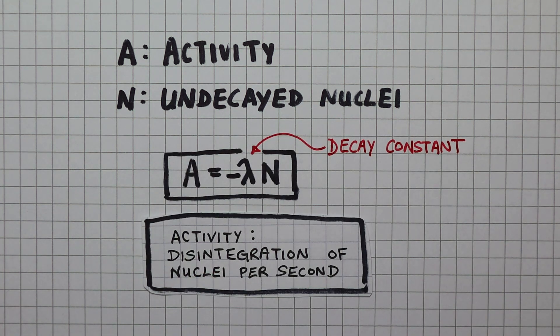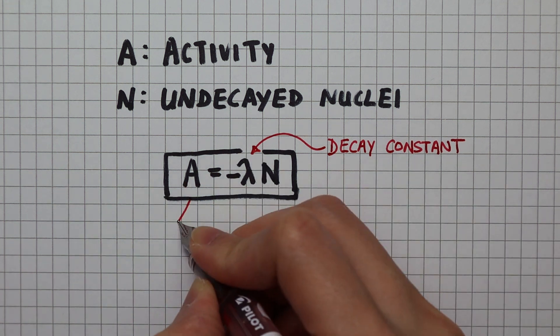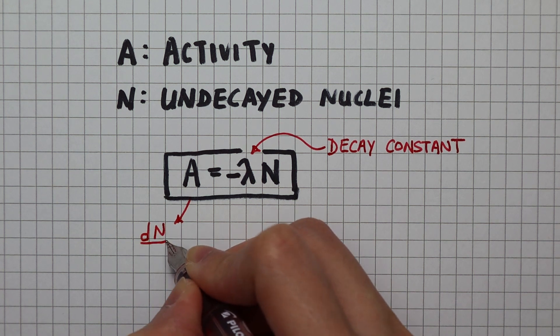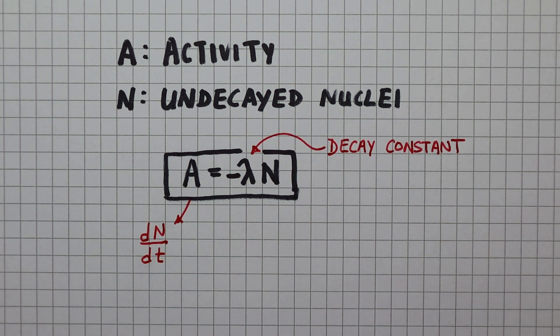Think about the definition of activity, the disintegration of nuclei per second. In other words, it is the change in the number of nuclei in a unit of time. This rate of change can be written as dn by dt.